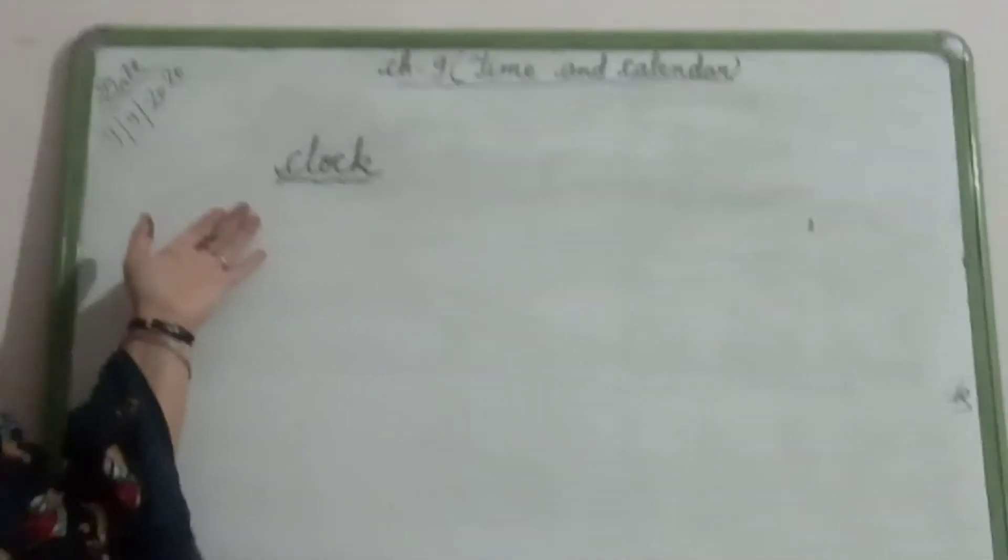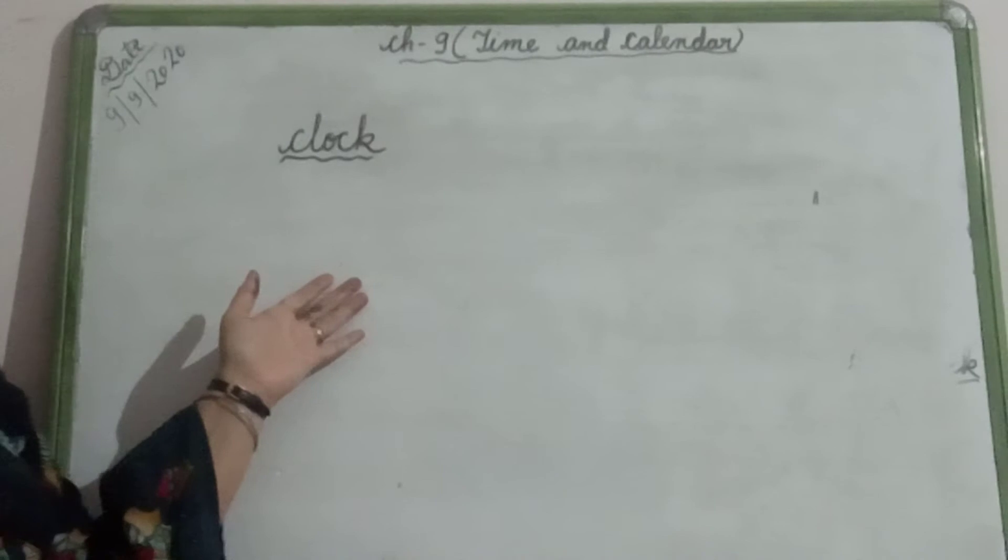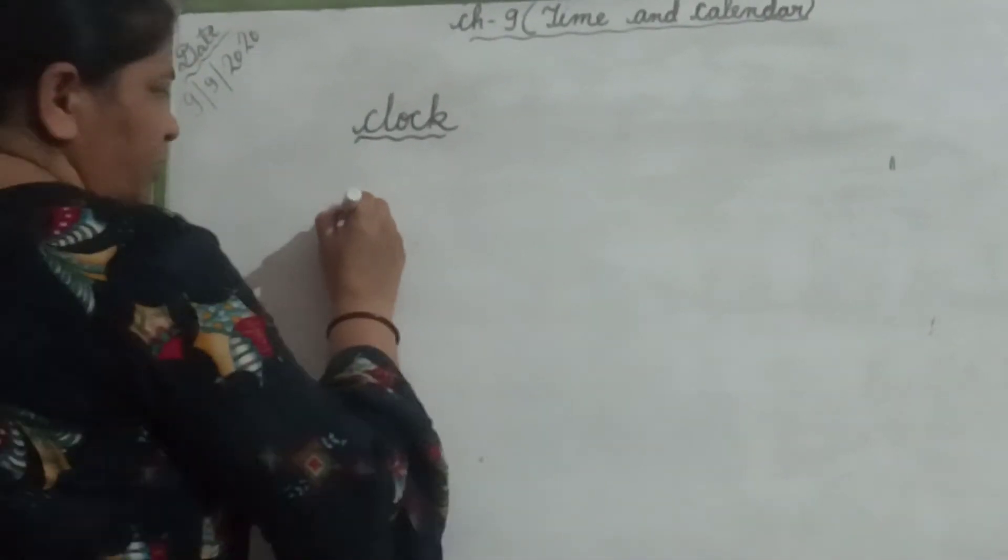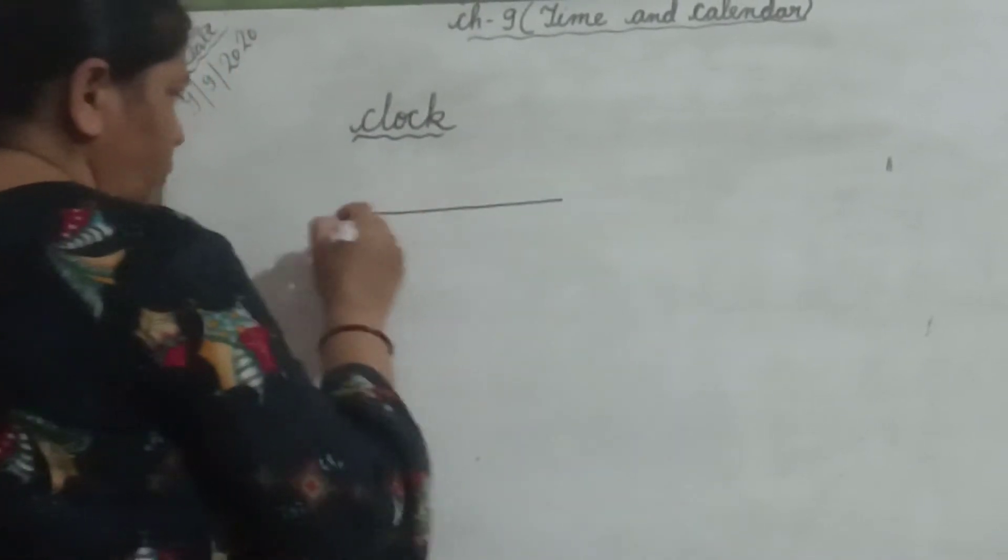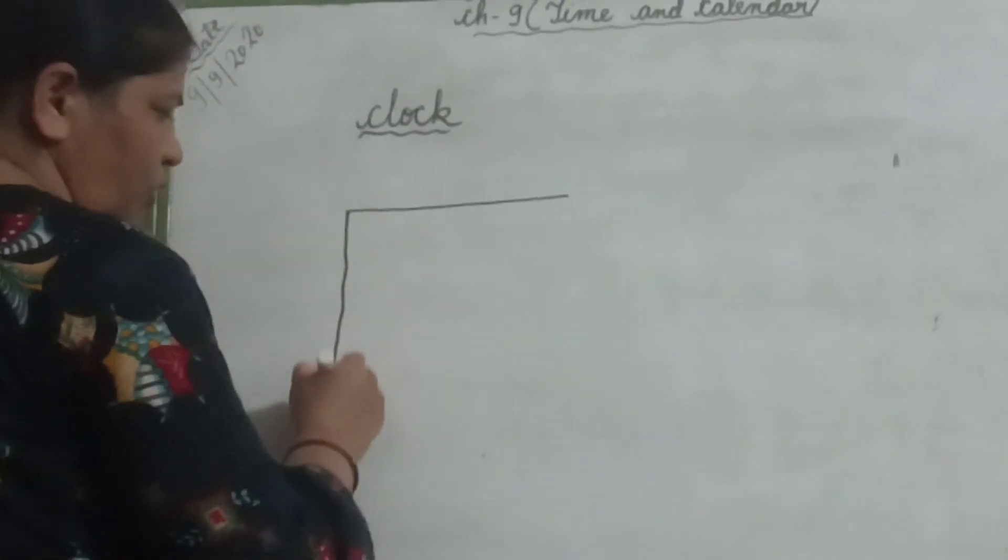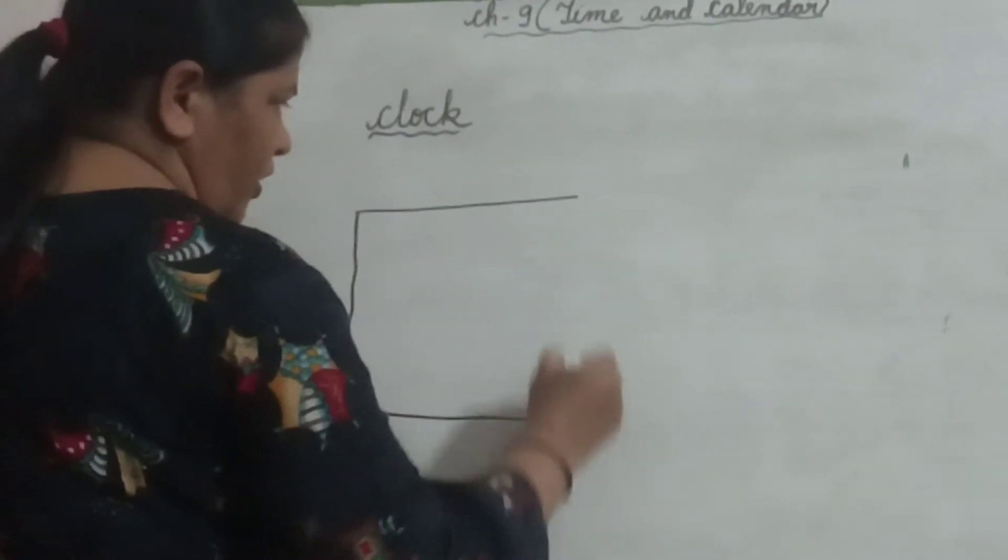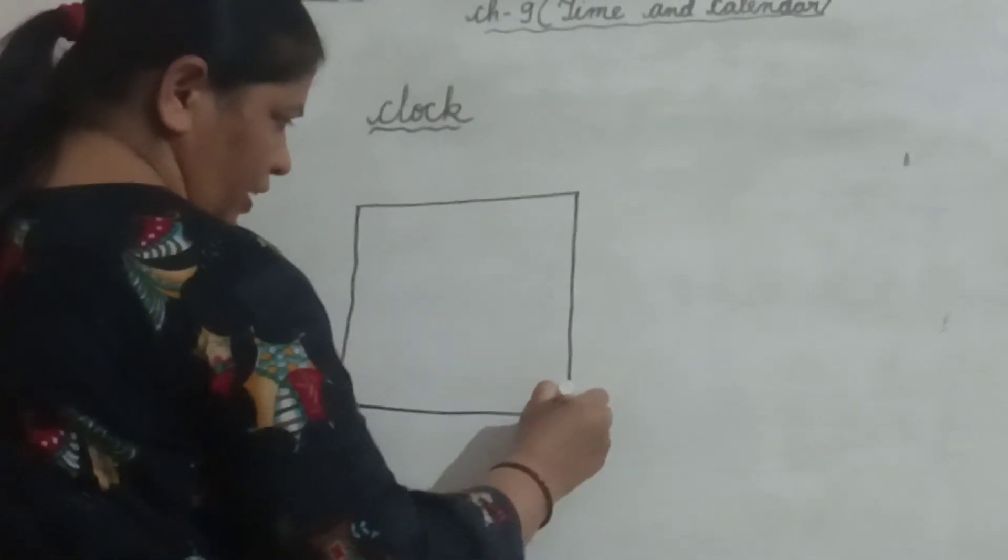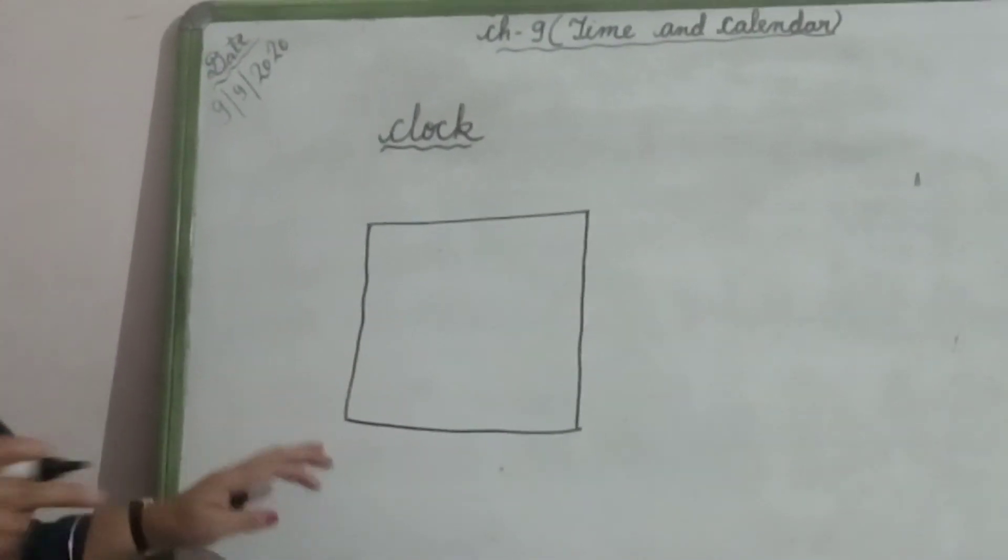Now children, I am going to explain you how we will make a clock. By making a clock, first we have to make a square. Children, you can make either circle also, you can make either triangle also. It's your wish. So, first we will make one square.